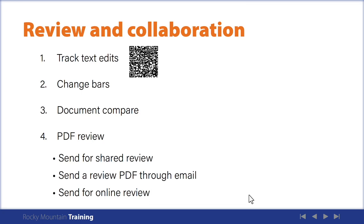Let's begin to discuss the review and collaboration workflow. I'm going to start with track text edits and then roll directly into change bars. Track text edits is a feature that allows the editor to enter edits in a way that they are visually highlighted so that you can accept or reject their changes. This is a great feature if everyone in the process has access to FrameMaker.